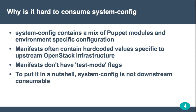You may think you could just use system-config to deploy your own OpenStack Infra, but that's a problem — it is hard to consume. System-config contains a mix of Puppet modules and environment-specific configuration: hostnames, domain names, email addresses, and usernames that are very specific to the OpenStack infrastructure. The manifests often contain hard-coded values specific to OpenStack, and they don't usually have test mode flags, with maybe the exception of the Gerrit manifest. There's no easy way to bring up any infra service with snake or certificates without backups in a testing environment. To put it plainly, system-config is not downstream consumable.